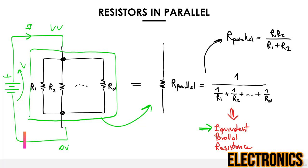The equivalent parallel and serial resistance is most useful to simplify mathematical calculations. If you know the equivalent value, it's much easier to calculate the current given a voltage, rather than calculating the current in each resistor and summing them up. Other times, you might replace many components with fewer, but that's not always better — each case is different.